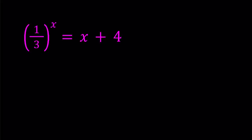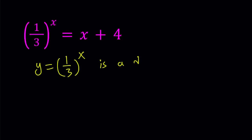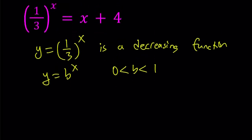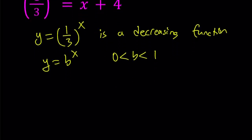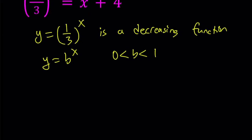So, my first approach is basically looking at the left hand side as a decreasing function. This is a decreasing function. In general, y equals b to the power x is decreasing if b is between 0 and 1. Obviously you don't want b to be negative, you don't want it to be 0, you want it to be positive, so there are two options. Either b is between 0 and 1 or b is greater than 1.